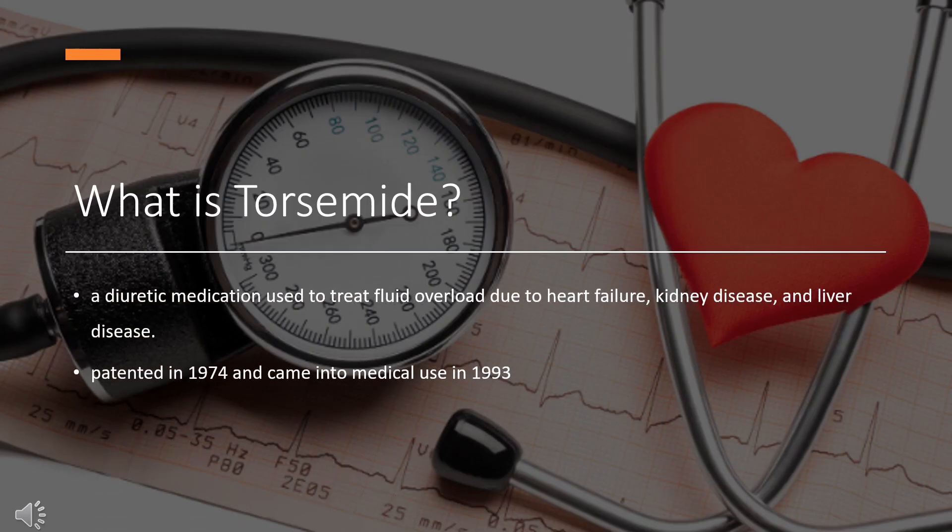What is torsemide? Torsemide is a diuretic medication used to treat fluid overload due to heart failure, kidney disease, and liver disease. It is a less preferred treatment for high blood pressure.